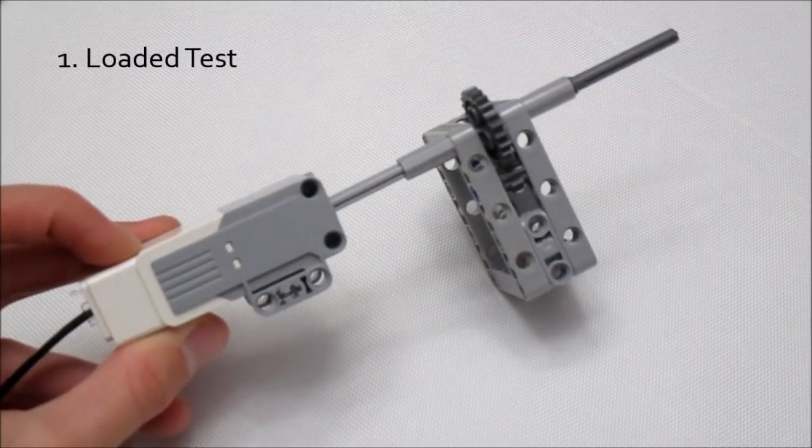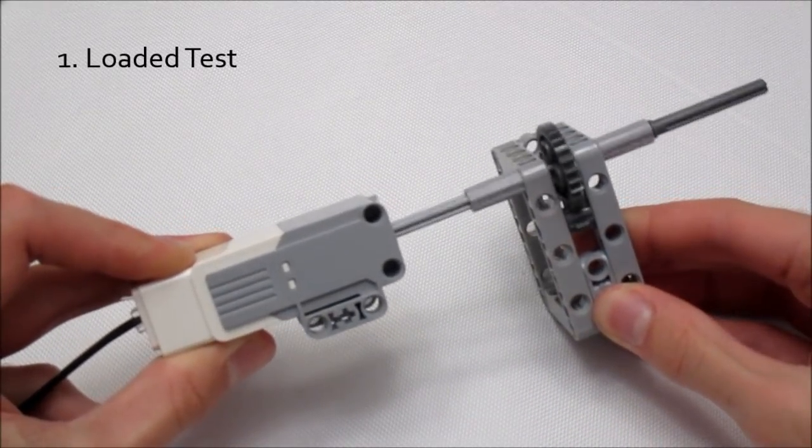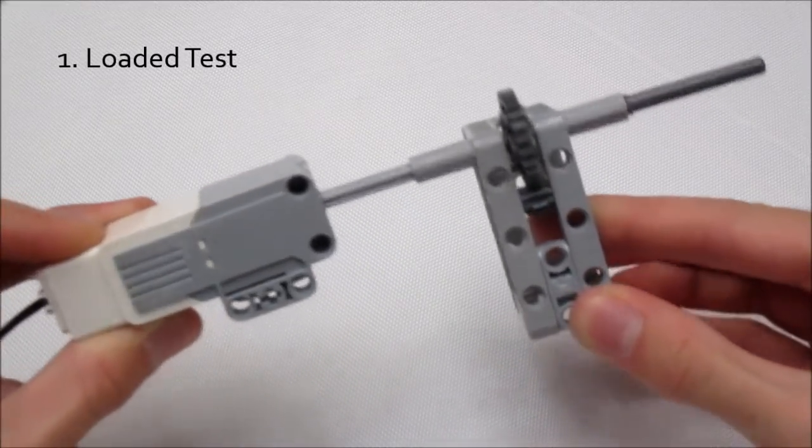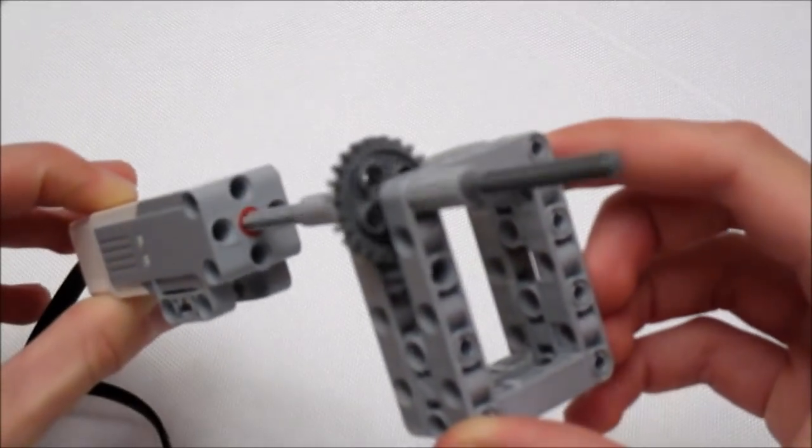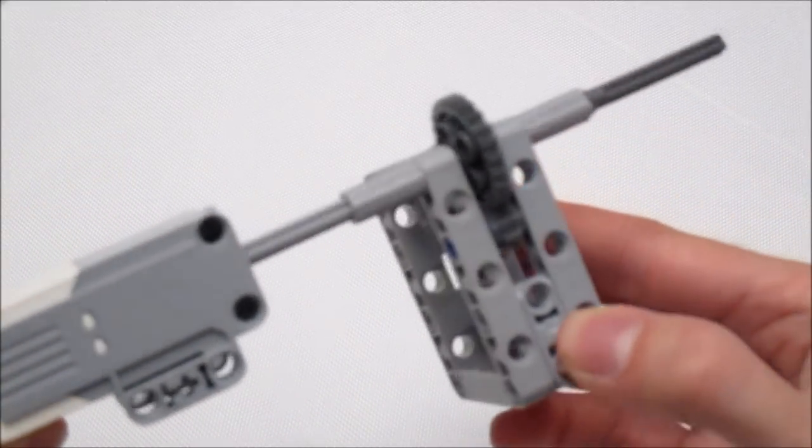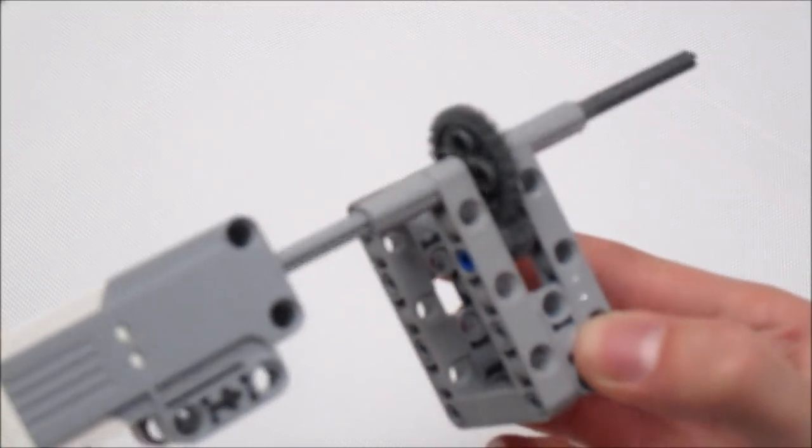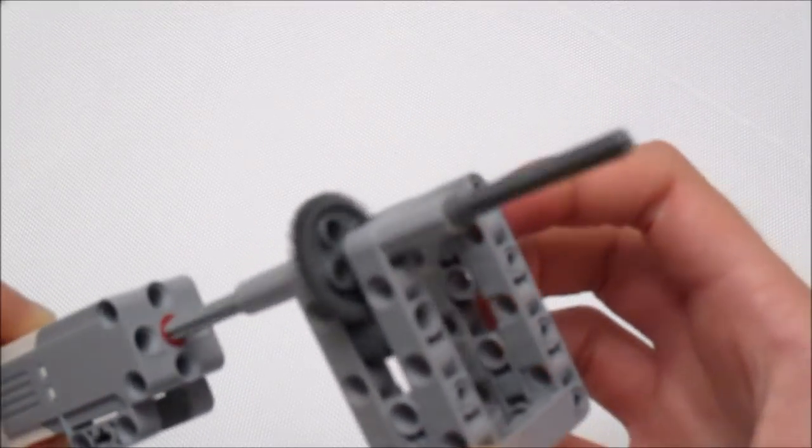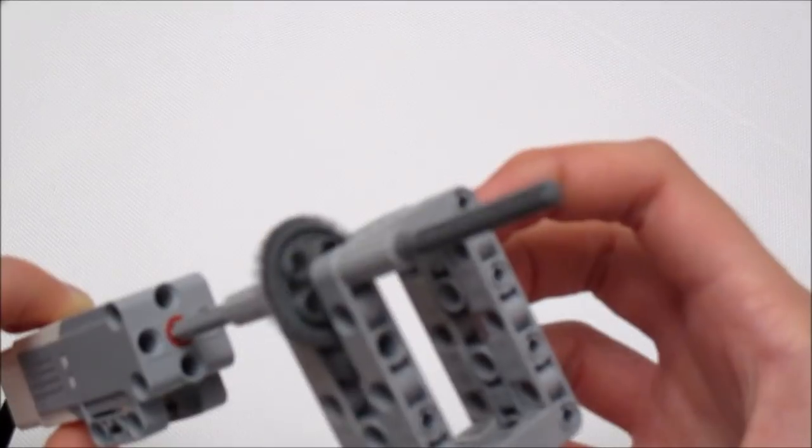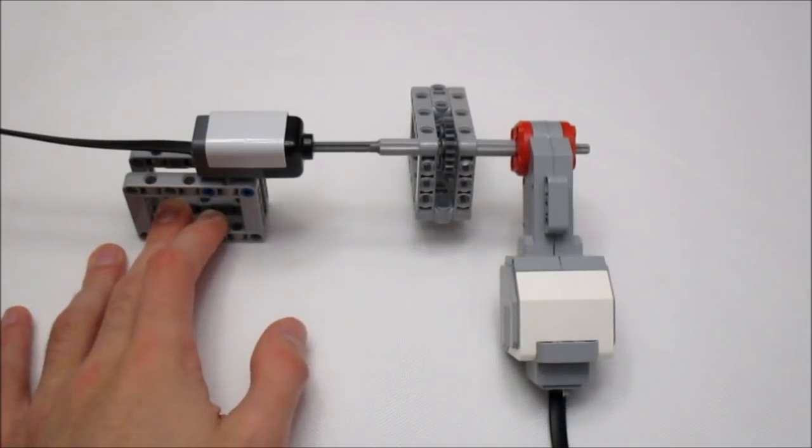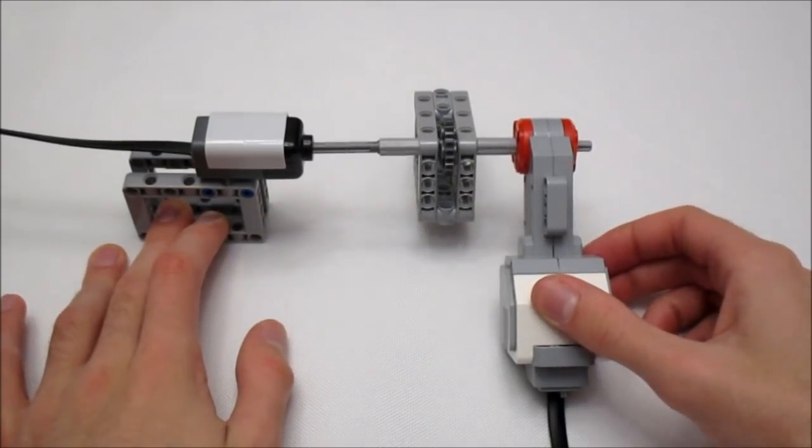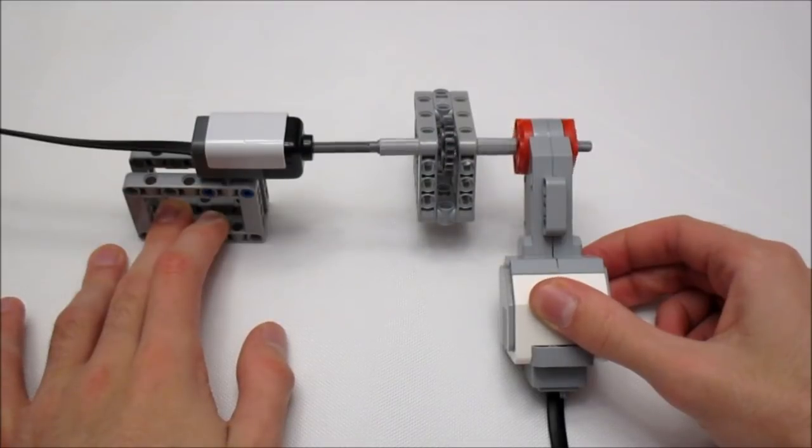For the loaded test, I made a simple mechanism that fit in line with the driveshaft coming out of the motor. It would go in between the motor and the rotation sensor. Basically all it was was a 1 to 3 gear ratio, gearing the RPM up 3 times to decrease its torque. The small pinion gear had one of those blue friction pegs on it.